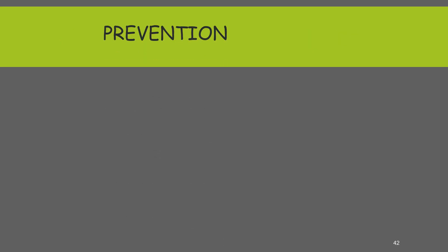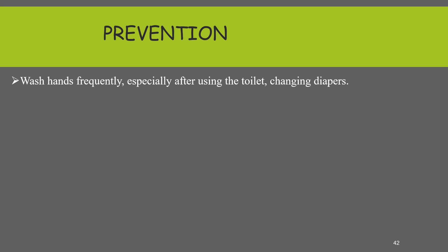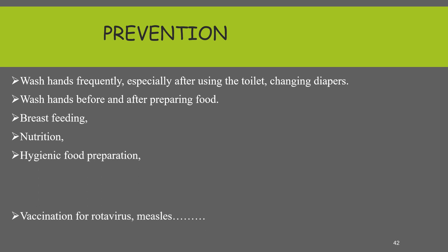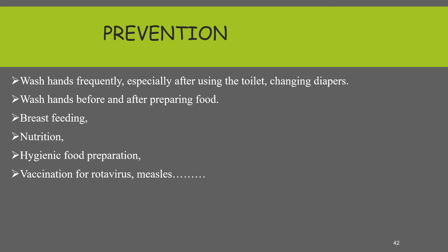For prevention of diarrhea, hand washing is very important — especially after using the toilet, after changing diapers, and before preparing food. Also, breastfeeding and child nutrition to prevent malnutrition, hygienic food preparation, and vaccination for rotavirus and measles are all important. Thank you for your attention, and don't forget to subscribe to this channel.